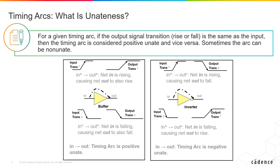If you look at the inverter, when the input is rising, the output is falling. And when the input is falling, the output is rising. So, the transition is the opposite of the input transition. Therefore, this is considered as negative u-nate.